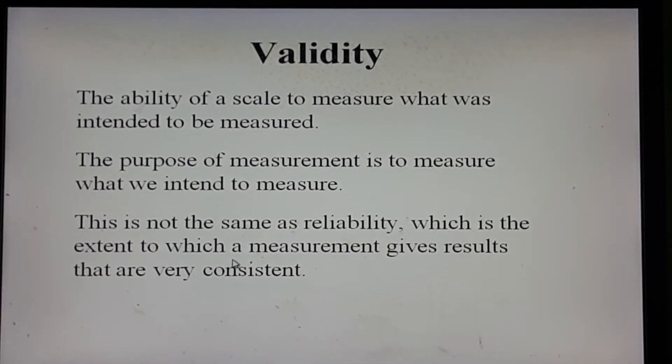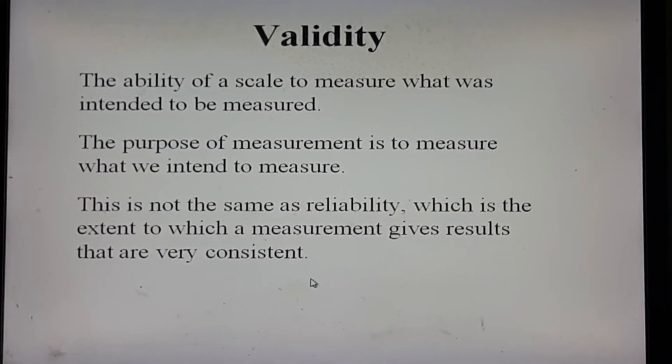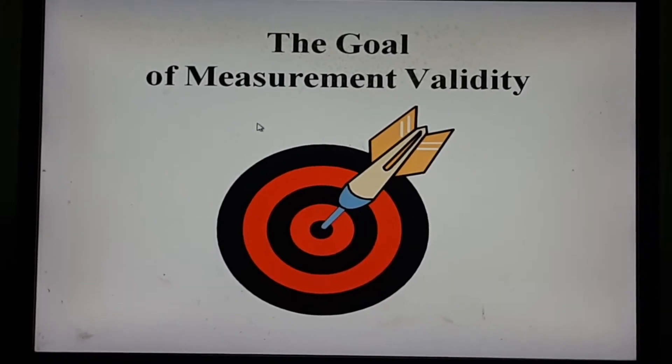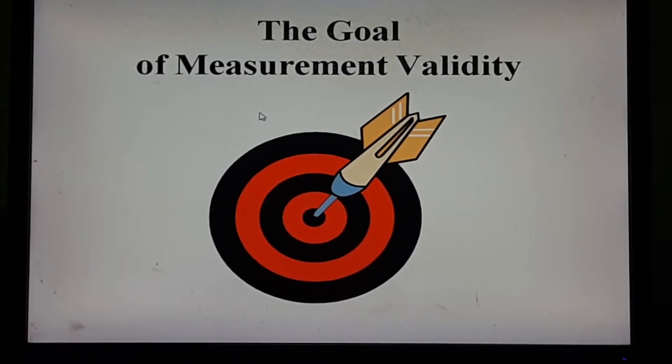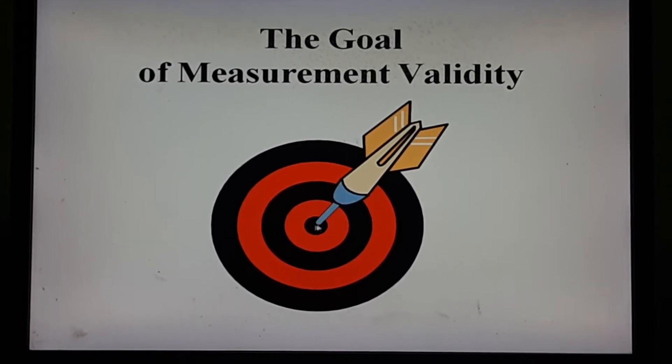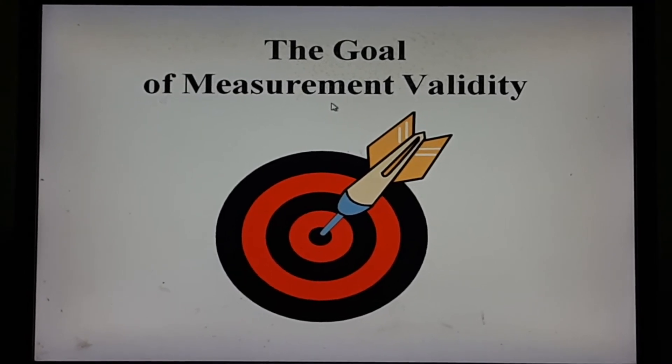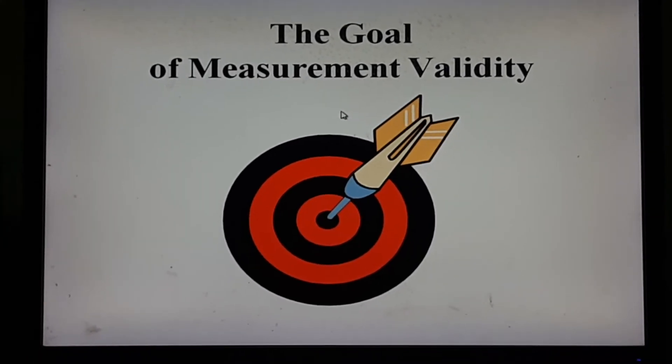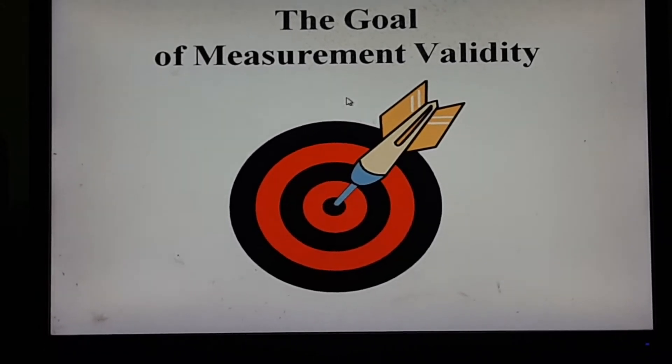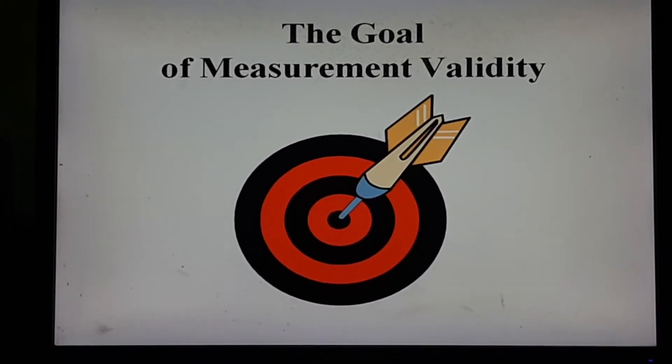Validity is not the same as reliability, which is the extent to which a measurement gives very consistent results. The target or purpose of validity is to achieve the goal — if the instrument or measurement can achieve the goal, then we can say that the measurement is valid, meaning its validity is very high. There are mainly four types of validity: face validity, content validity, criteria validity, and construct validity.